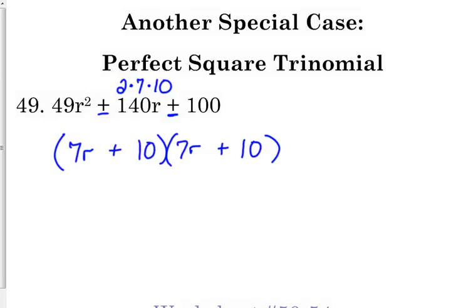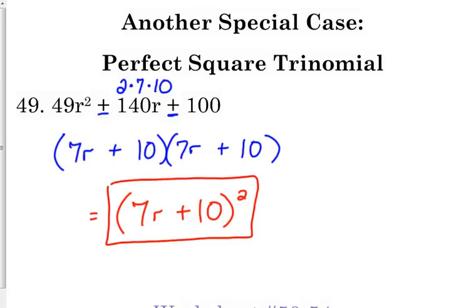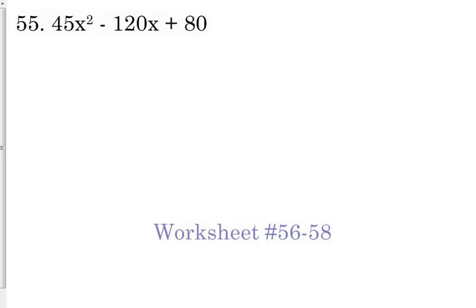Now the deal with perfect square trinomials is that they always give you the exact same factor repeated. So typically you will see it written like this: (7R + 10)². Because it is it times itself. So this is how I want you to write it if you are presented with a perfect square trinomial. You've got to write it with the squared, because that's how you're going to see it as a multiple choice answer choice. I guarantee that's how you're going to see it. So I do insist that you write it that way if you have a perfect square trinomial.